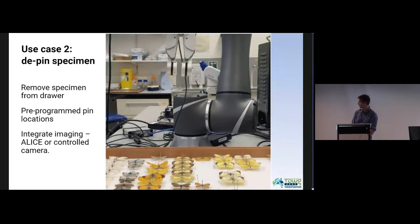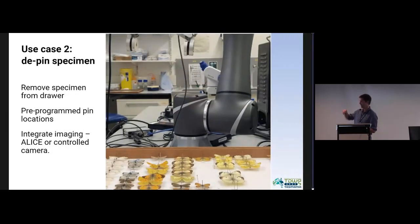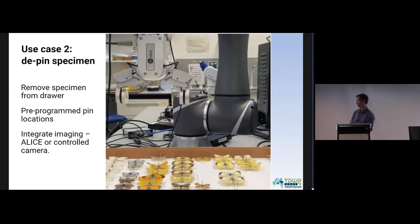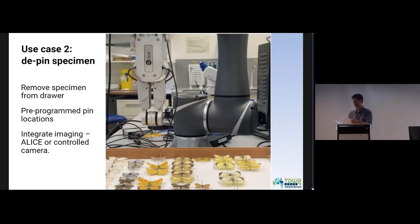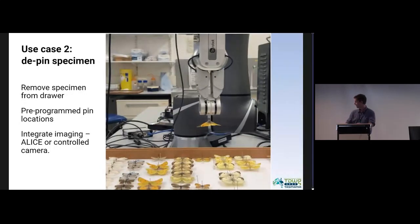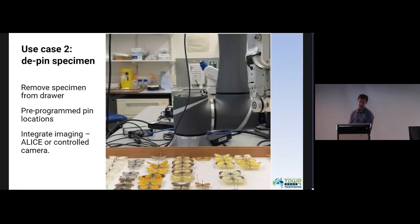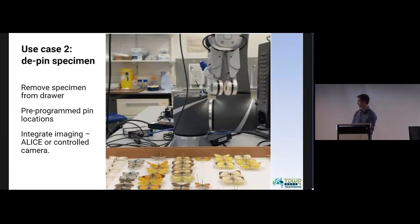This is use case two, de-pinning the specimen from the drawer. So you use the gripper to take the pinned insect out of the drawer, and as you can see, the robot doing it here. We still need to decide how to do the imaging with this.